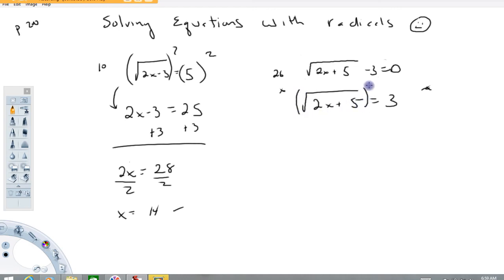So at this point now we square both sides of the equation. The square root of 2x plus 5 squared gives you 2x plus 5 equals 9. Then we would subtract 5 from both sides. Divide both sides by 2 and we get x equals 2 out of that.